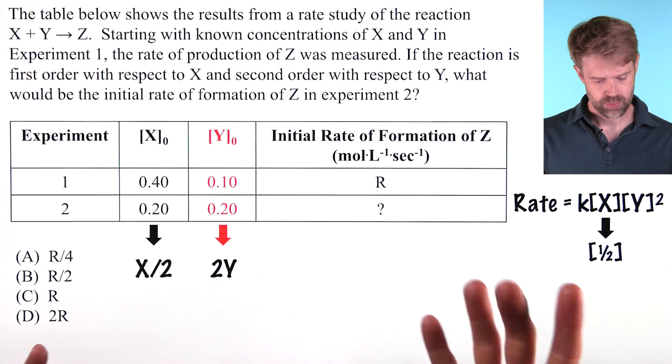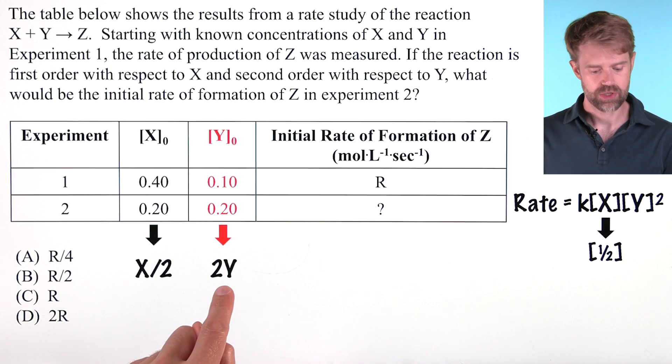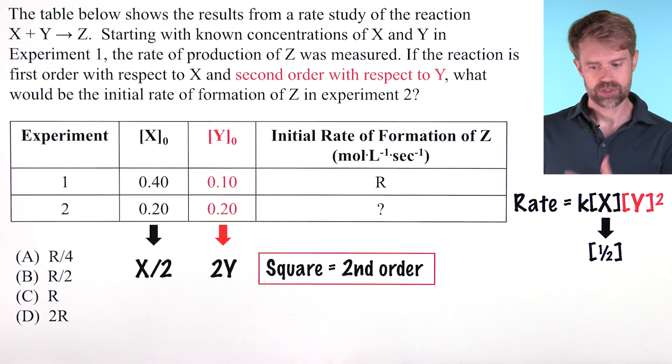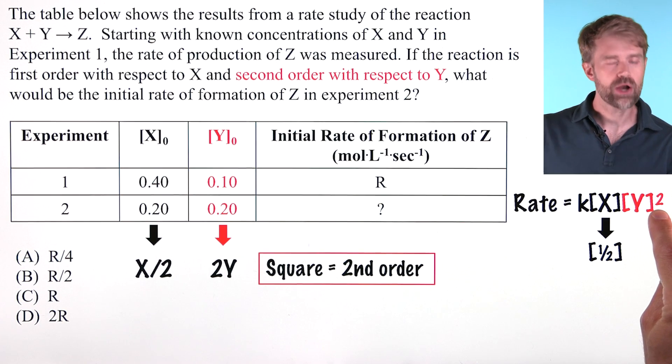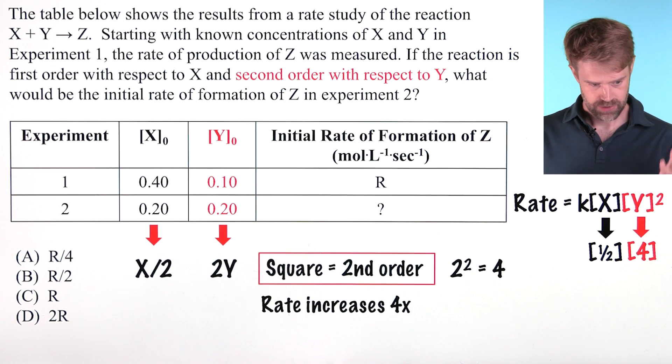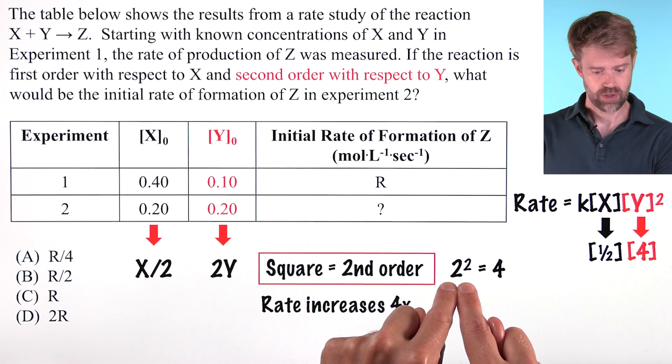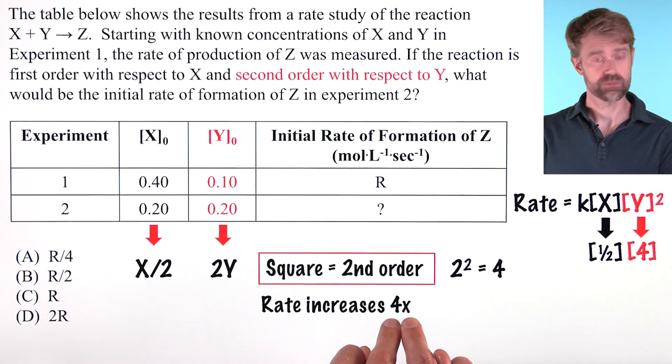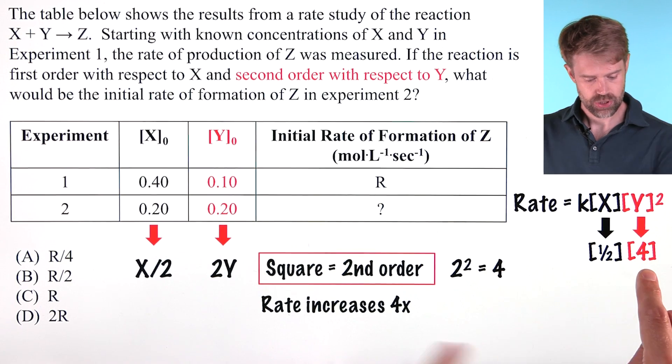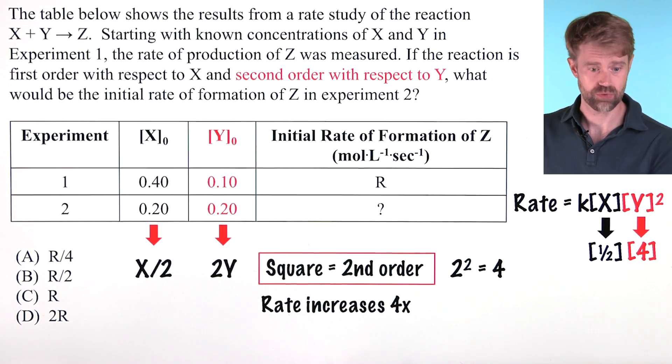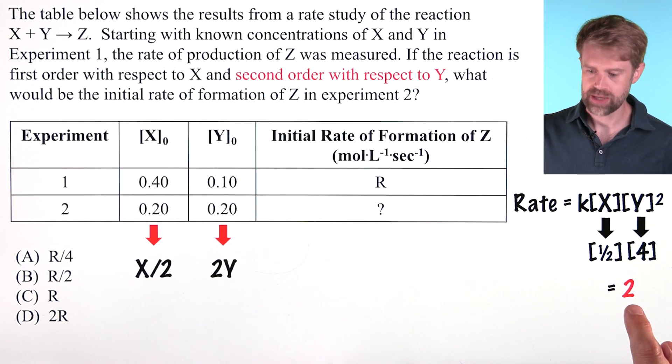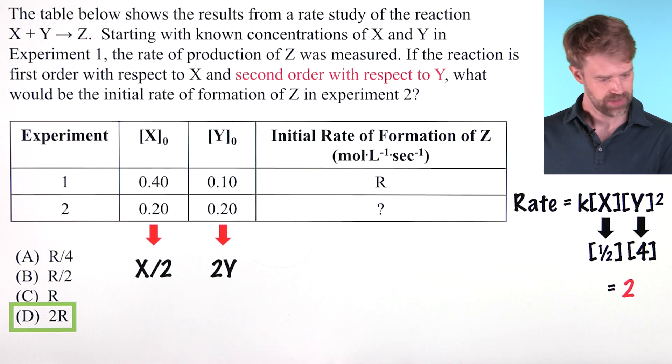Now let's look at Y. Between experiment 1 and experiment 2, the concentration of Y doubles. Now we know that Y is second order. So whatever change happens to the concentration, we have to square that change to get the change in rate. So we doubled the concentration, so 2 squared equals 4, so the rate increases by 4 times. This change to Y contributes a 4 times increase to the rate. Now, multiply these two changes together for X and Y, and we get a 2 times increase compared to the original rate, which corresponds to choice D, 2R.